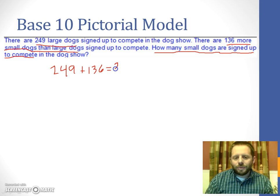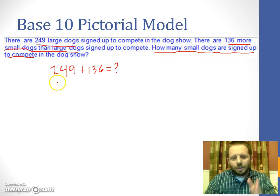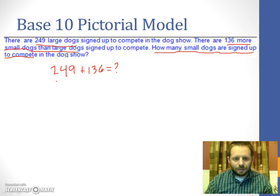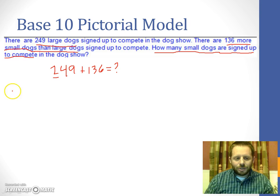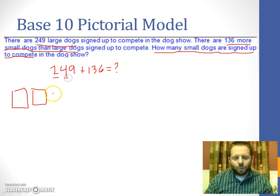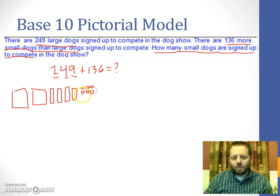Now with base 10 blocks, remember you have three pieces. You have your small unit blocks that represent ones, your long skinny rods that represent 10, and your flats that represent 100. We're going to quickly model this problem. We're going to start by making two flats for our 200, four longs to represent our 40, and then nine small squares to make our nine ones. So this creates the number 249.